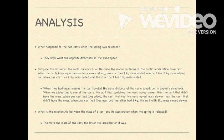When the spring was released, both of the carts went opposite directions. When we added one kilogram to one of the carts, the cart that contained the mass moved slower than the cart that didn't have the mass. When they had equal masses, the cart traveled the same distance at the same speed but in opposite directions.